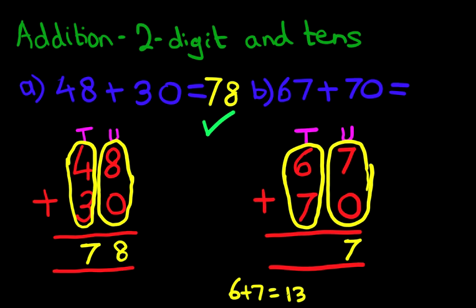You can use the dot method, the number line method, or the head and fingers method. So, how do we write 13 here? Well, we put 1 here, and we put 3 here. This 1 is now part of a new column. Do you know what the new column is called? It is the hundreds column.